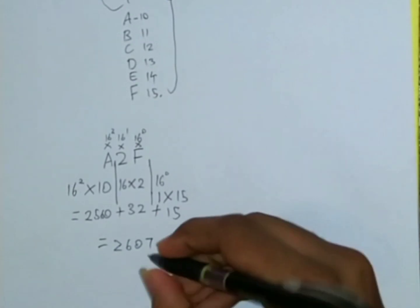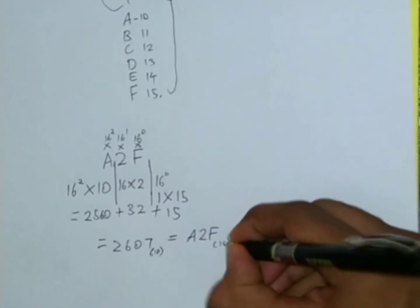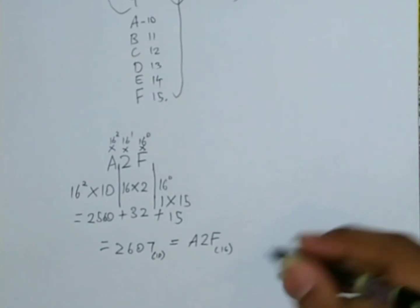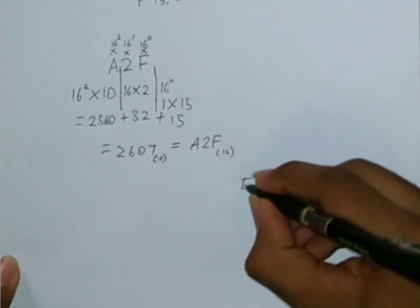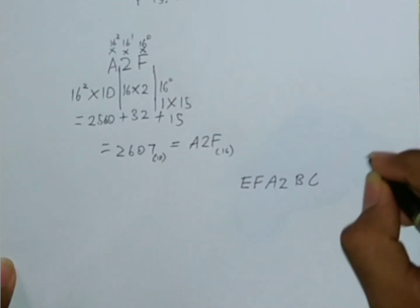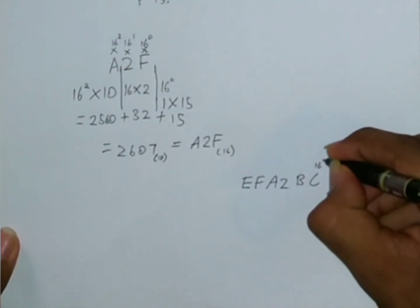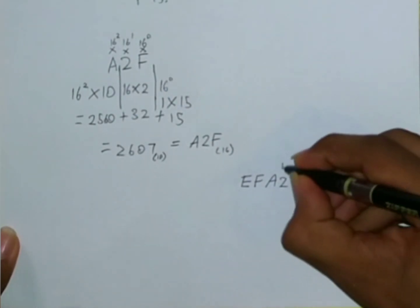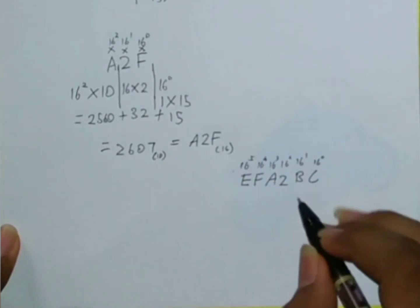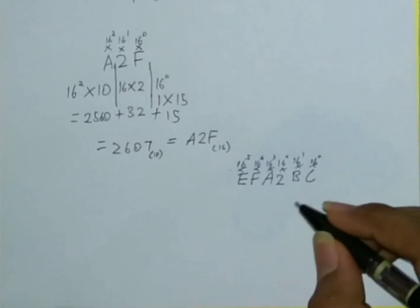So you can just write it like this — to the base 10 means decimal and to the base 16 means hexadecimal. So if you have a longer hexadecimal number, like maybe EFA2BC, you're gonna just multiply all of them with the powers of 16, starting from the right which is 16 to the power 0, and then 16 to the power 1, and then just add them all after you multiply them, and you're gonna get the decimal equivalent.